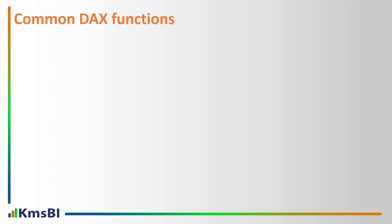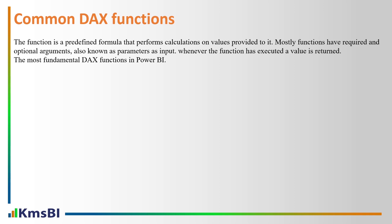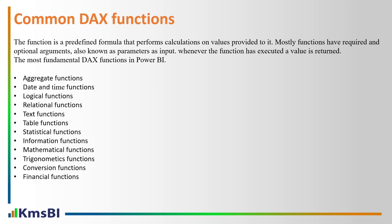Now we're going to discuss common DAX functions. A function is a predefined formula that performs calculations on values provided to it. Most functions have required and optional arguments, also called parameters, as input. Whenever the function is executed, a value is returned. The most fundamental DAX functions in Power BI include aggregate functions, date and time functions, logical functions, and so on. We're going to discuss all these functions step by step in the upcoming videos.